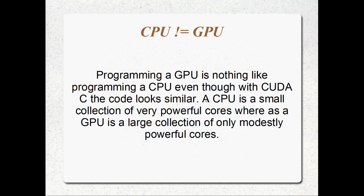But there's a fundamental difference between the two architectures. The CPU is a small collection of very powerful cores, whereas the GPU is a very large collection of only modestly powerful cores. This computer here has a quad-core running at 2.6 GHz, whereas the GPU — an NVIDIA GT 440 — has 96 cores. So it's not a quad-core, not even an oct-core or 12-core, it's got 96 cores. But they only run at some megahertz, not gigahertz like a CPU. Still, you get a bunch of them performing calculations and they absolutely fly.